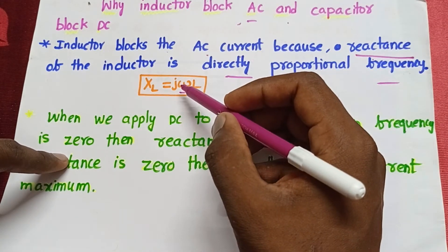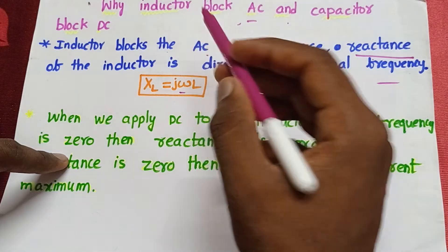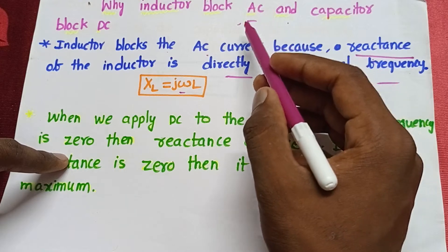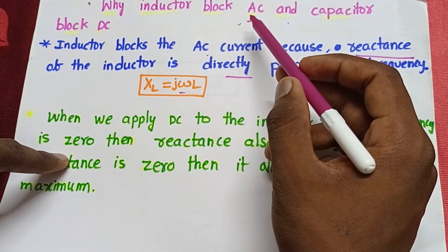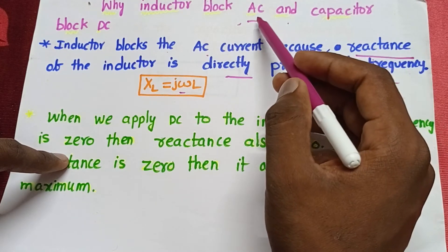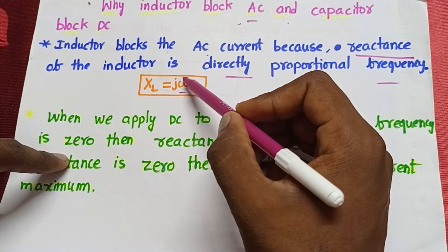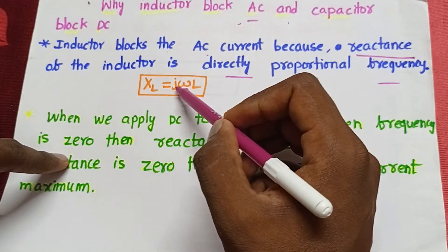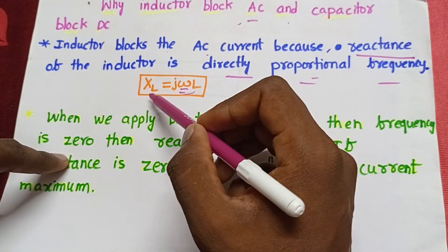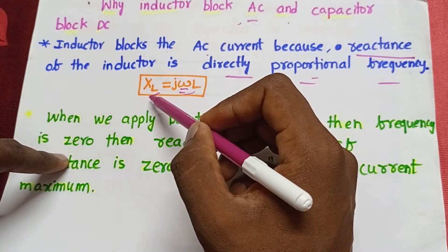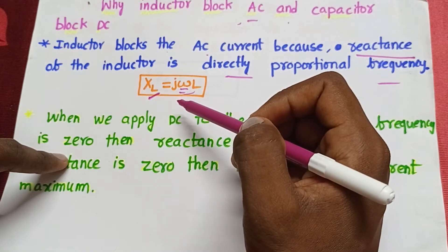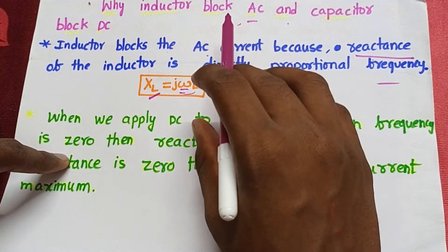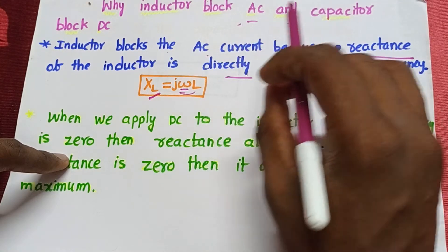Assume if we apply AC current to the inductor — AC means alternating current. If there is alternating current, then there is a frequency also. In AC current we have some frequency, so we have an omega value, and therefore we have a reactance. If we have a reactance, then it does not allow the current.